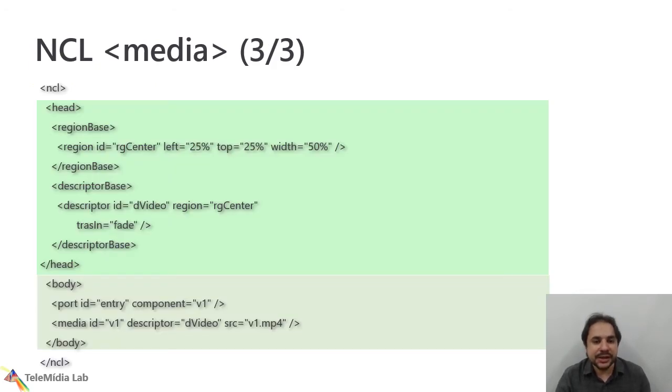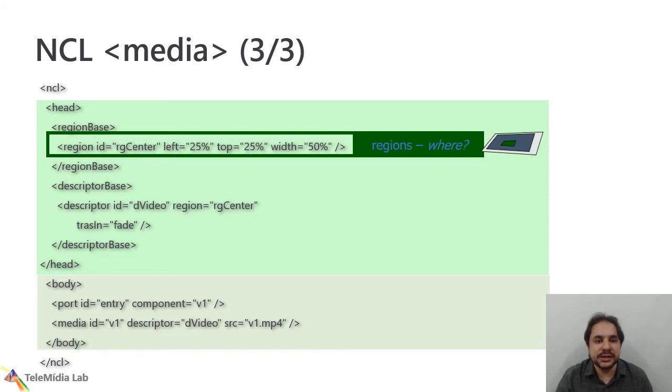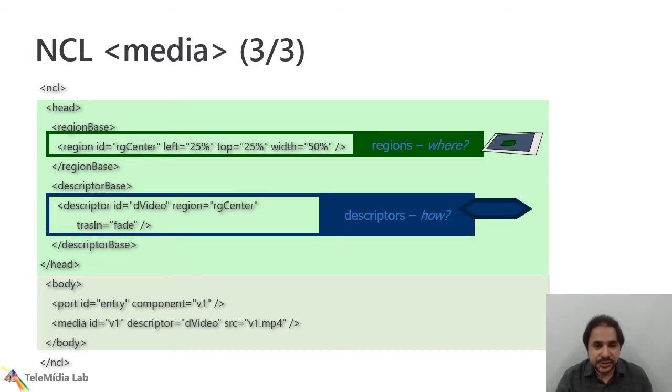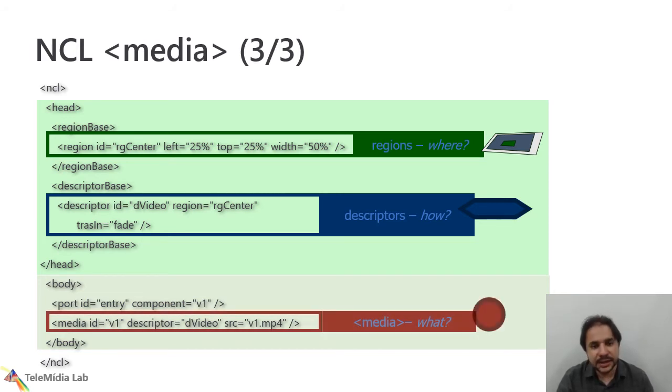Here, we have a document, an NCL document for this application. It should have two main parts. First, the head part, where are the reusable elements such as region and descriptor. And then we have the body part, when is defined the media elements and the link elements as well. Here, we see the region that defines the center of the screen. That answers the question where. Here, we have the descriptors that defines that if you use the center of the screen. And that defines the fading effect to be used. And then we have the media elements that use that descriptor and defines that a specific video should be used.